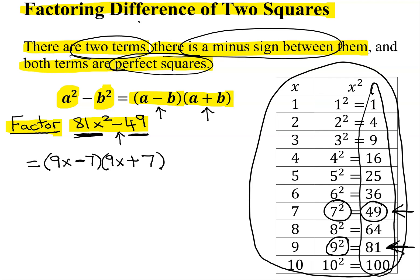I put 9x minus 7 in the first parentheses, 9x plus 7 in the second. I could have done it the other way around. It would have been equally correct. So I have factored the problem, and here is my answer.